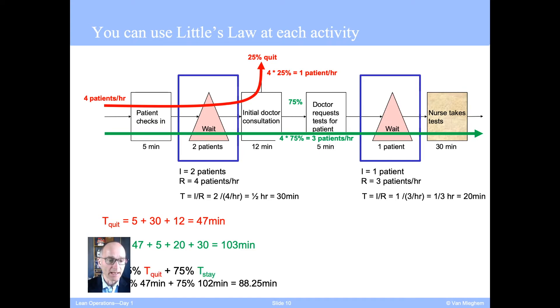Well, we can take the weighted average and say that 25% of them will stay about 47 minutes. 75% will stay 102 minutes, which gives us a grand weighted average of 88.25 minutes. That is the average flow time of a patient in this process.